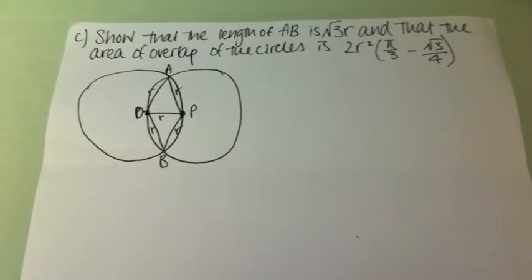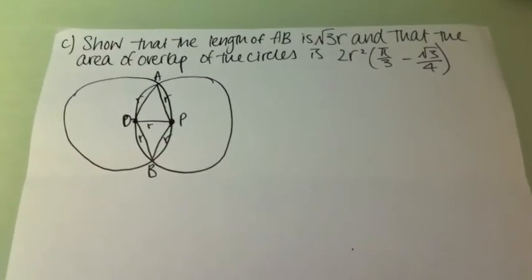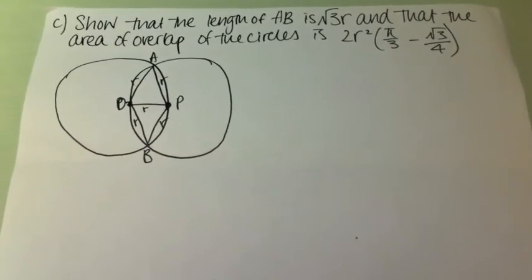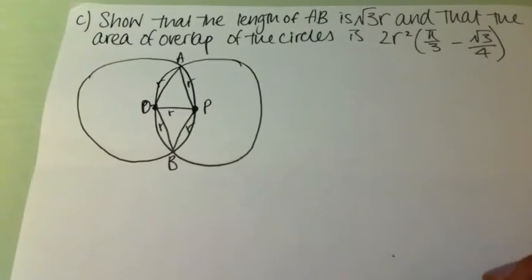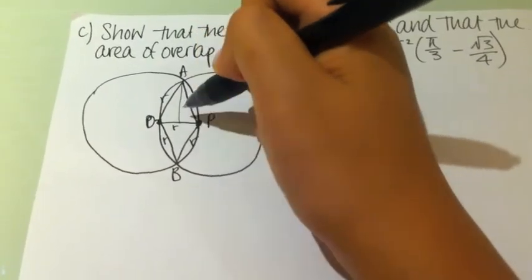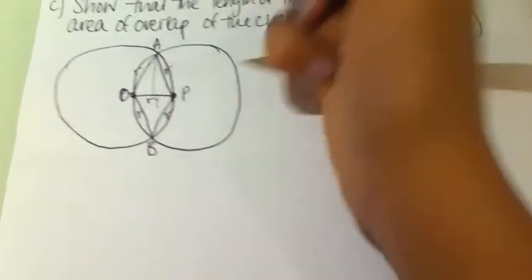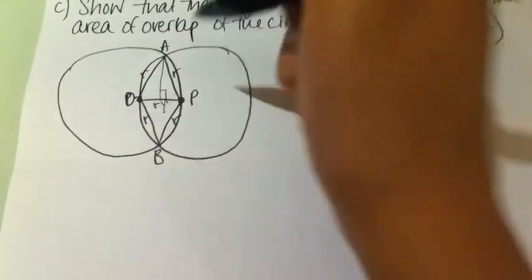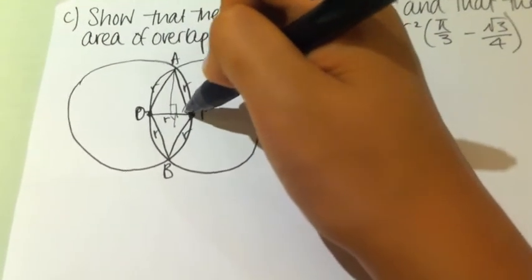For the first part of part C, I have to show that the length of AB is √3 r. We already know that triangles AOP and BOP are equilateral triangles, as all of their sides have radius r. In order to tackle this, I'm going to find the height of A to a midpoint — let's call it Y. This height is 90 degrees, and since this is an equilateral triangle, this angle is 60 degrees.